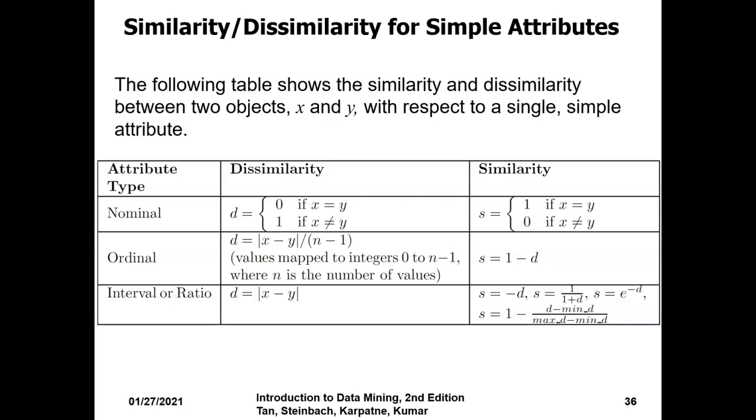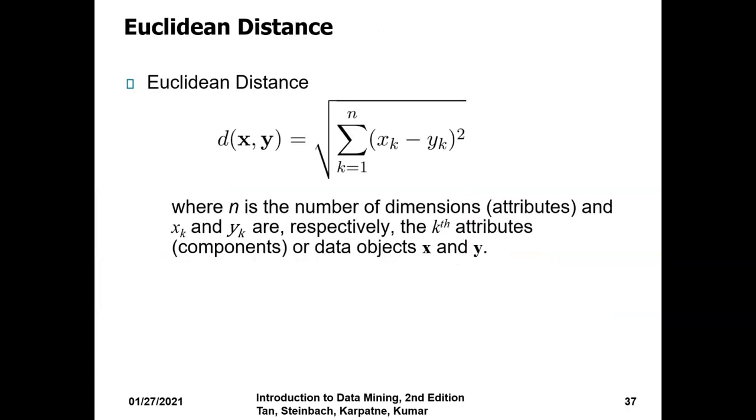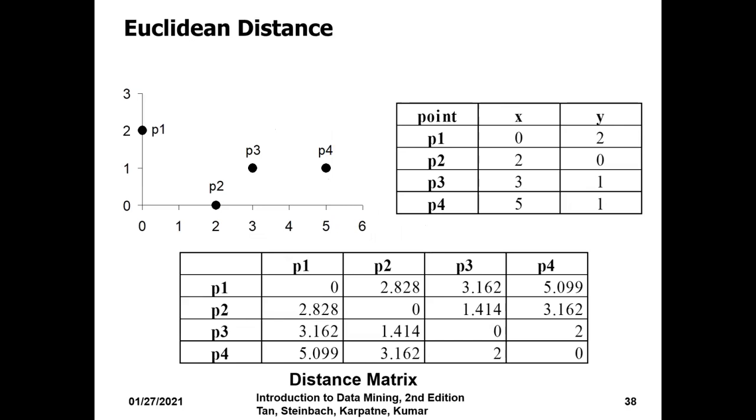For the ratio, it's very simple. For dissimilarity it's x minus y, and for similarities there are varieties of formulas available. Euclidean distance is used to check the distance between one point and another point. We have a variety of distances. It includes Euclidean distances. You can find this formula and use it practically by calculating different point values.